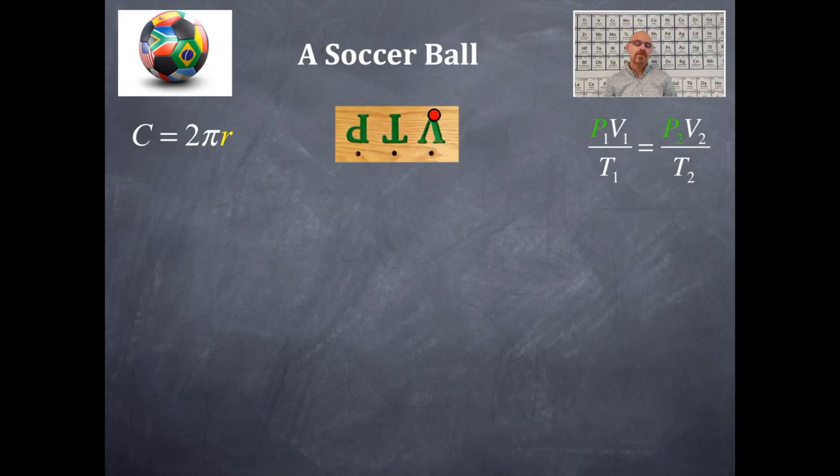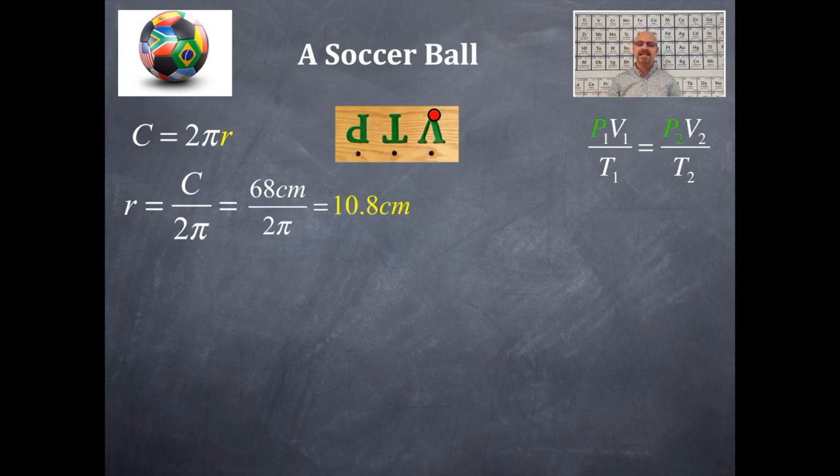So circumference is equal to 2 pi r. What we're going to do is solve for r. So I've rearranged this circumference equation to solve for r. I've got radius is equal to circumference divided by 2 pi. I'm going to plug in 68 for the circumference and 2 pi and get a number of 10.8 centimeters for the radius that's at regulation size originally.